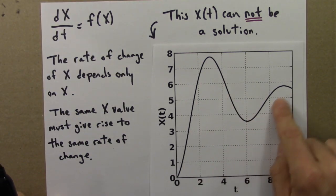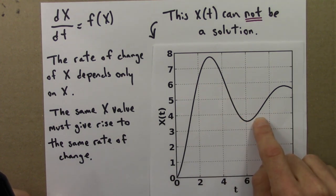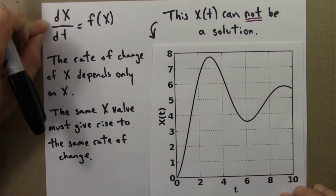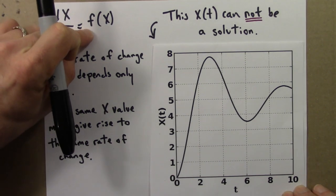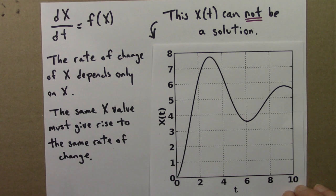So this wiggling function cannot possibly be a solution to this equation. And I can state that with certainty, even though I don't know what this f of x might be. And this is a general result.